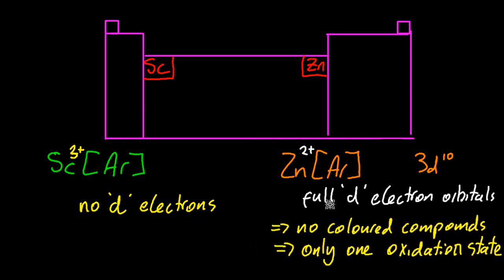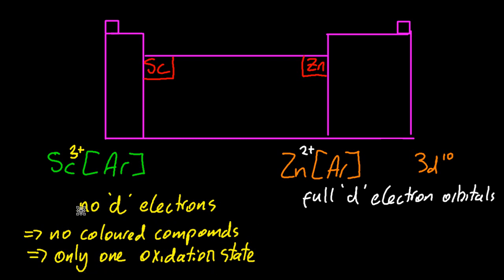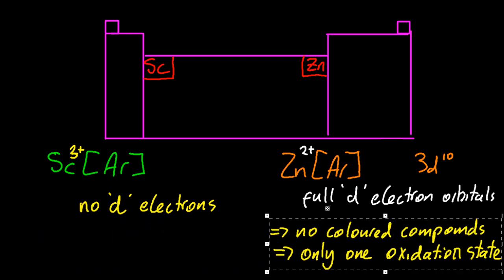The electrons can't move up or down, because it's either full or it's empty, the d-orbitals. So you're not going to get the classic transition metal properties of coloured compounds and multiple oxidation states and catalysis.